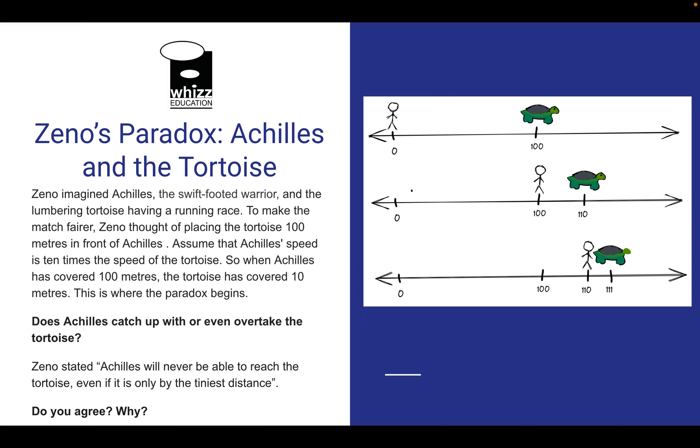Let's assume that Achilles' speed is 10 times the speed of the tortoise. So when Achilles has covered 100 metres, the tortoise has covered 10 metres, and this is where the paradox begins.